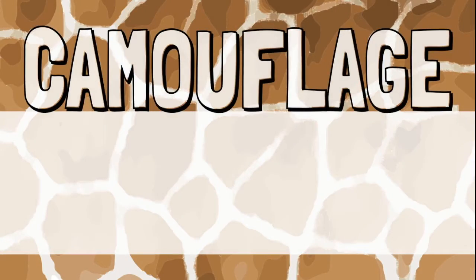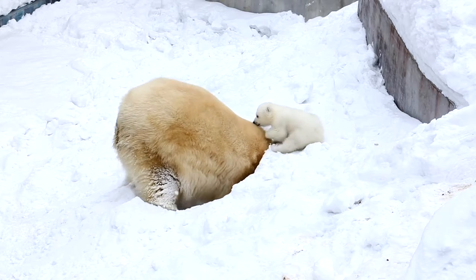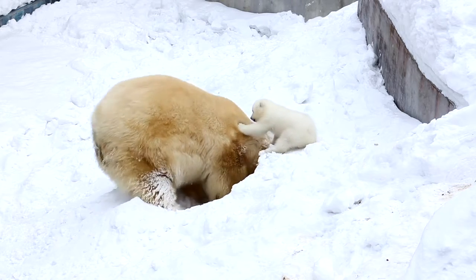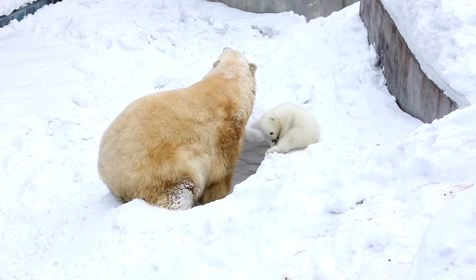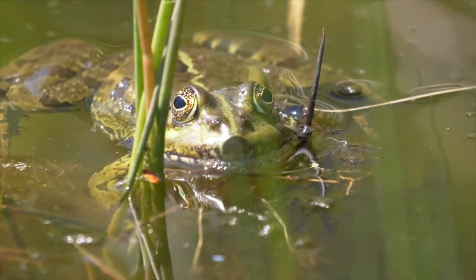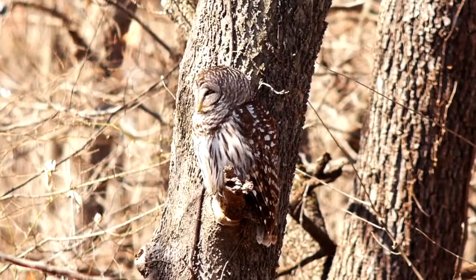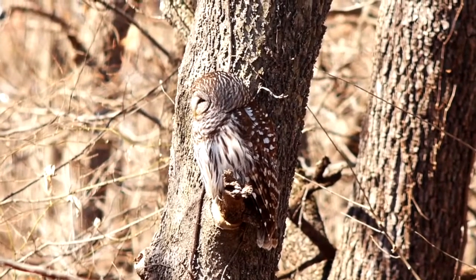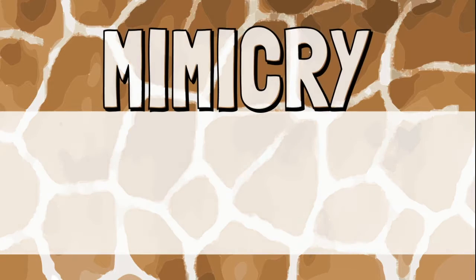Another type of physical adaptation is called camouflage. Camouflage is when the color or pattern of an animal helps it blend into its surroundings. For example, a polar bear is white to blend in with the snow around it. Camouflage can help animals hide from predators. It can also be used to sneak up on prey without being seen.